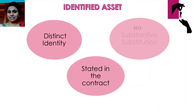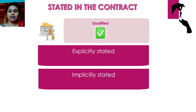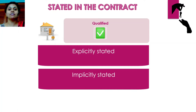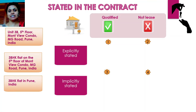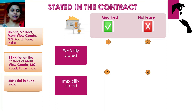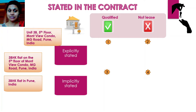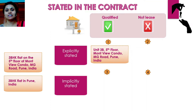So we are done with distinct identity. The next criterion is that the asset should be stated in the contract — clearly stated with no ambiguity on what the underlying asset is. The standard says these assets can be explicitly or implicitly stated. For example, if the underlying asset is a 3 BHK flat in Pune, India, and the contract gives a complete address with unit number, then it is very clear what the underlying asset is. It is explicitly stated and therefore qualifies.